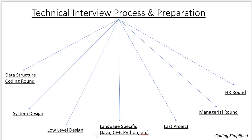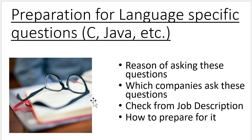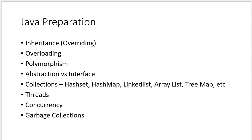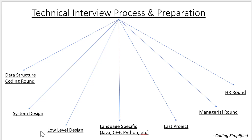You should also prepare for language-specific concepts. If you are appearing for financial companies or service-based companies, they focus more on language-specific questions. For example, in Java they can ask about inheritance, abstraction, concurrency, threads, and multithreading. We have covered a topic on how to prepare for the language-specific round, so please see that video.